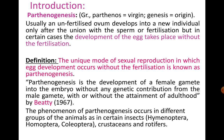Parthenos means virgin and genesis means origin. So the individuals who originate from a virgin without the participation of the sperm is what is called as Parthenogenesis, and the individuals which reproduce by this process are called Parthenos.